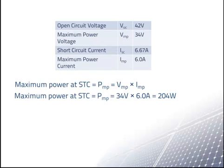Plugging in the numbers, we find that P sub MP is equal to 34 volts times 6 amps, which comes out to be 204 watts.